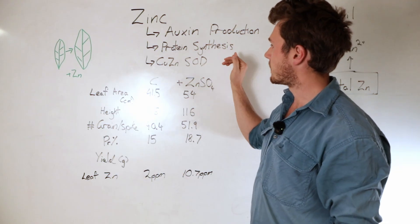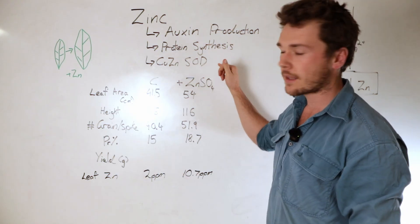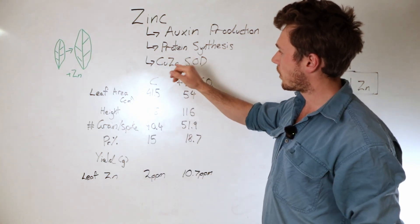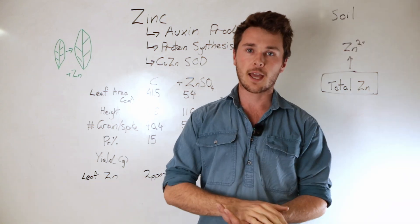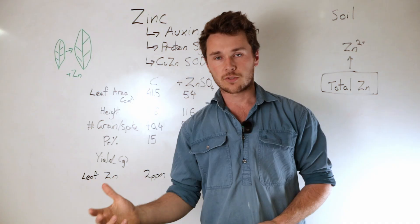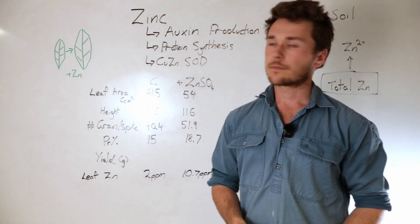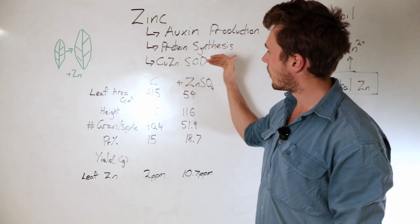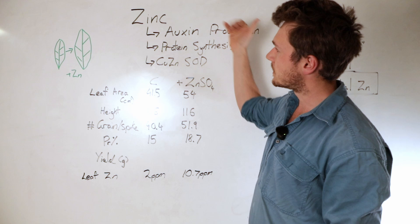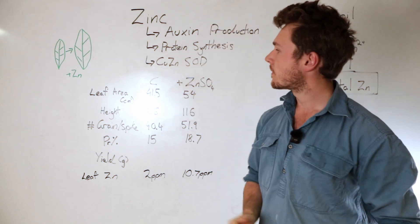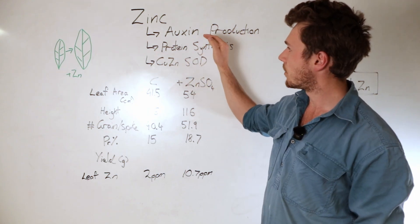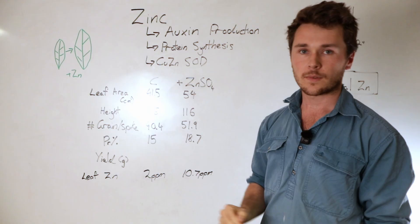Another important component zinc is used for is in what's called the copper-zinc superoxide dismutase. It's effectively a very powerful antioxidant that captures radical oxygen species or free radicals and neutralizes them. This is quite important for reducing the oxidative stress on the plant.